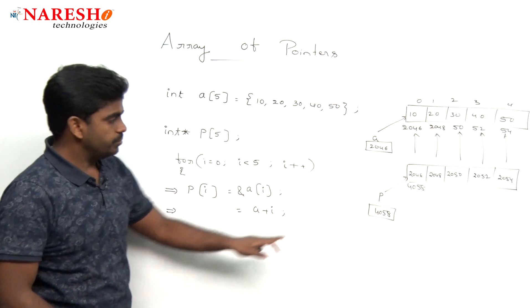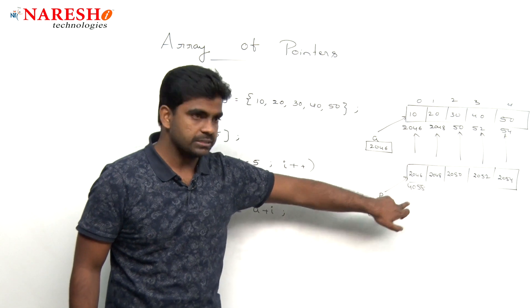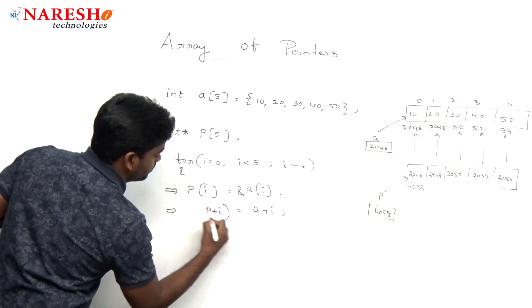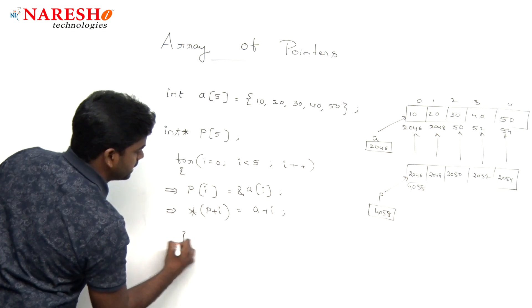will be stored into, here it is p of, p plus 0, nothing but p plus i pointer. This is a pointer.